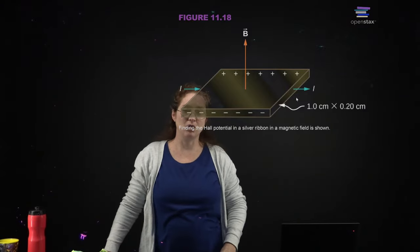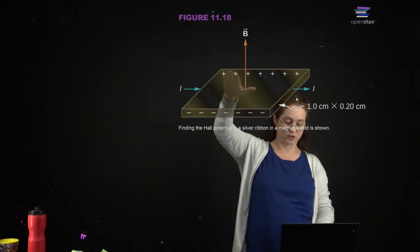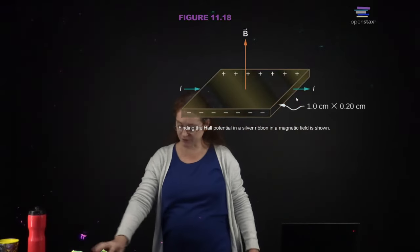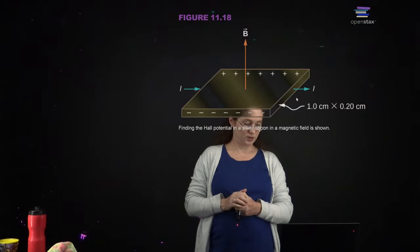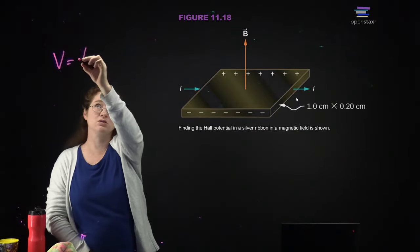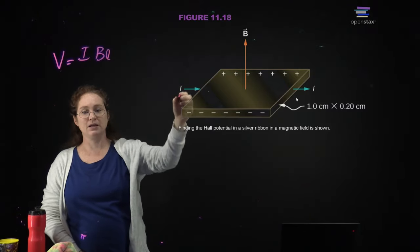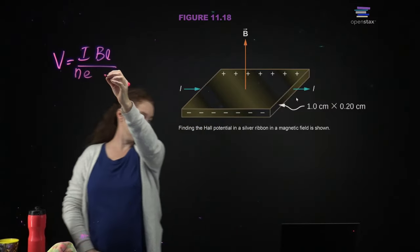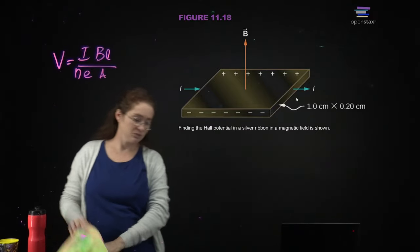We can find the Hall potential across a wire. You're modeling it as a thin strip and using that as your wire. The voltage equals the current times the magnetic field times the length, divided by the number of electrons times the electric charge times the area: V = IBL / (neA).